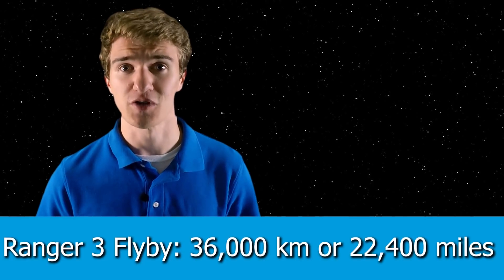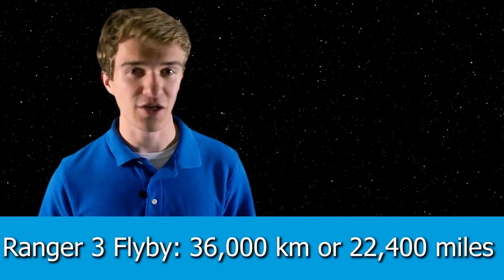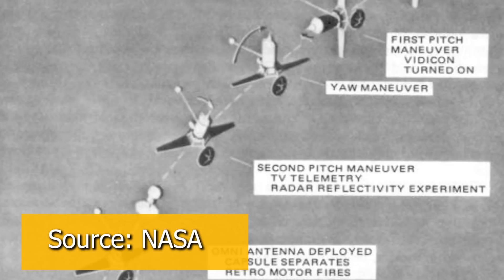Ultimately, instead of impacting the surface of the moon, it performed a flyby of 36,000 kilometers away from the lunar surface. So this too was a failure, not only because they weren't able to impact the moon, but also because on the way, they had a lot of computer malfunctions and weren't able to get any data back from the mission. So far, JPL, which was in charge of the Ranger program, was 0 for 3.